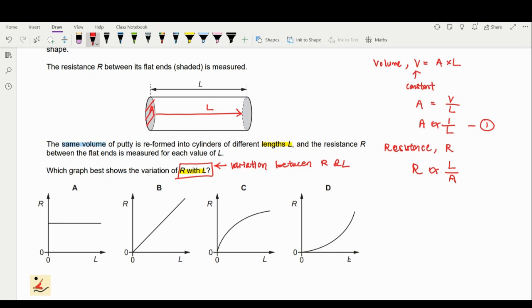We're going to change the area to the variation of the length, so R will be proportional to length divided by 1 over L. Therefore, R will be proportional to L squared. This is a quadratic relationship.